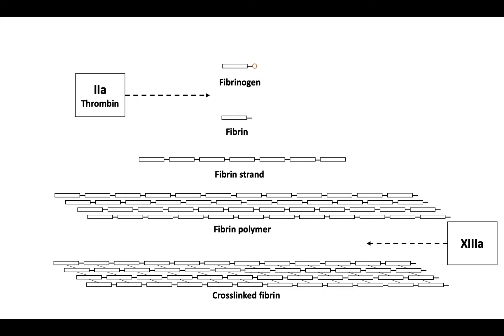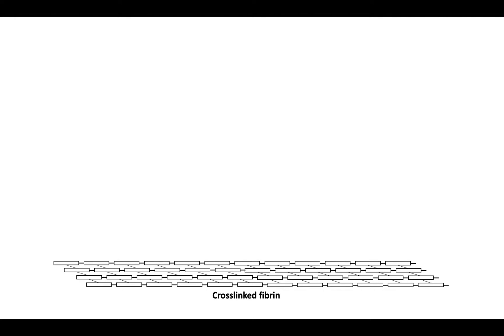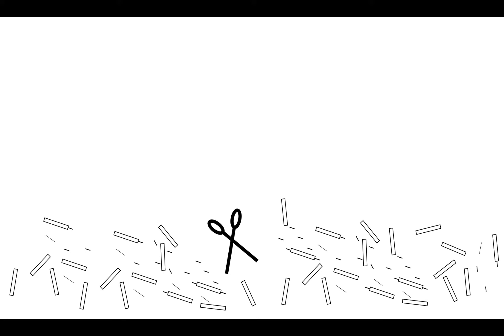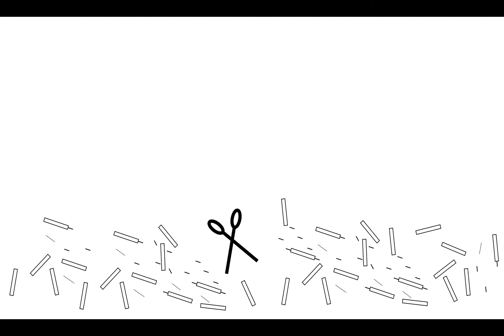Our focus will be on cross-linked fibrin. Cross-linked fibrin must eventually undergo fibrinolysis, which is a process by which the cross-linked fibrin gets cut into its constituent components, known as fibrin degradation products. The agent of fibrinolysis is plasmin, which primarily cleaves the polymerized fibrin strand.